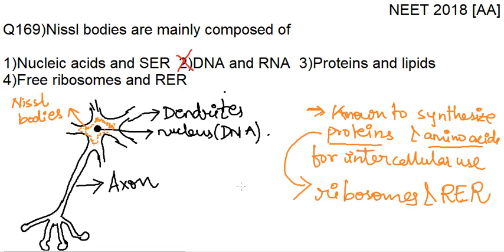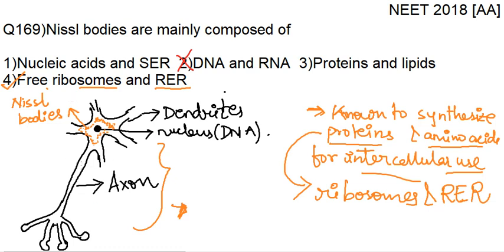So the missile bodies will be composed of free ribosomes and rough endoplasmic reticulum — that is the fourth option. These proteins and amino acids are used for intercellular use, meaning within this particular neuron. Those proteins necessary for this cell are produced by the missile bodies, which are composed of rough endoplasmic reticulum and free ribosomes together. So our correct option is free ribosomes and rough endoplasmic reticulum.